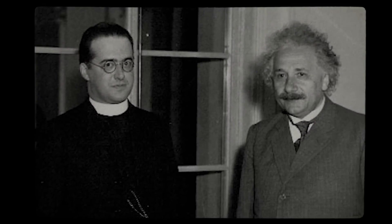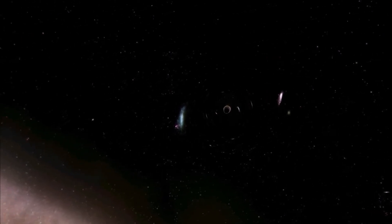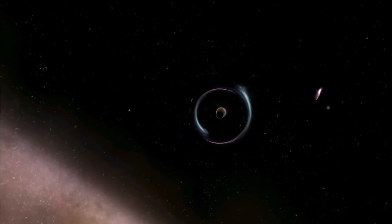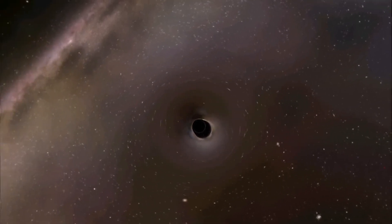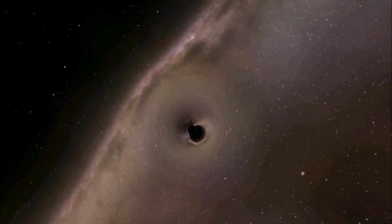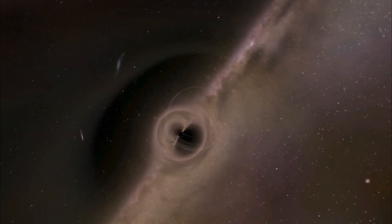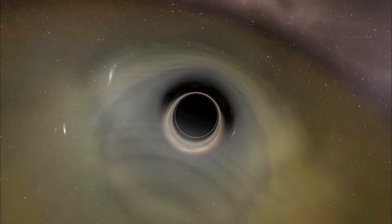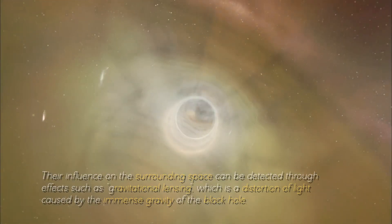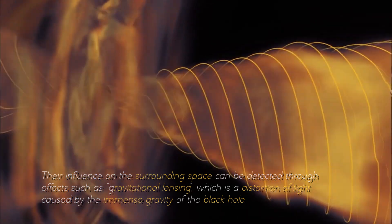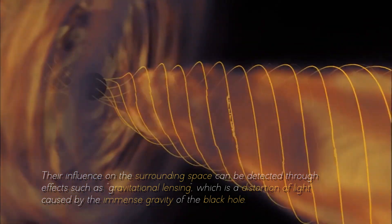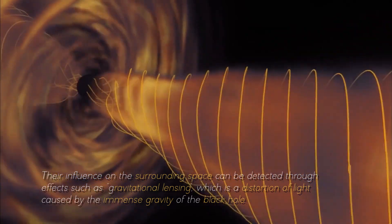The event horizon is not a solid physical surface like the crust of a celestial object, but represents a mathematical boundary, beyond which the structure of space and time behaves in a way that defies our intuition. The presence of an event horizon around black holes is what makes their direct study difficult, but this does not mean that it is completely impossible. Their influence on the surrounding space can be detected through effects such as gravitational lensing, which is a distortion of light caused by the immense gravity of the black hole.